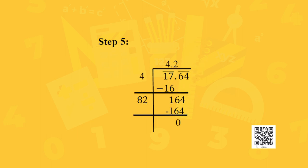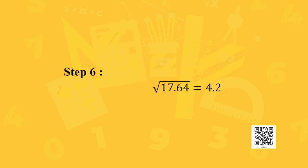In step 5, 82 × 2 = 164, so the new digit to fill the blank is 2. Dividing, 82 × 2 = 164 leaves remainder 0. Since the remainder is 0 and no bar is left, the square root of 17.64 is equal to 4.2.